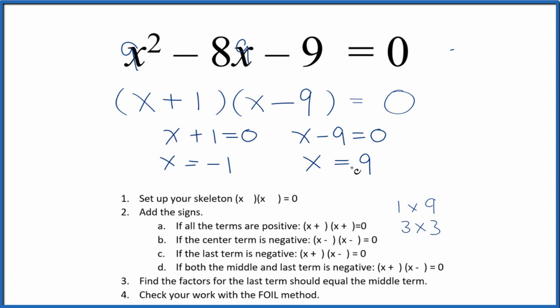If you use the quadratic equation, you'll get these same values. This is Dr. B factoring the equation x squared minus 8x minus 9 equals 0. Thanks for watching.